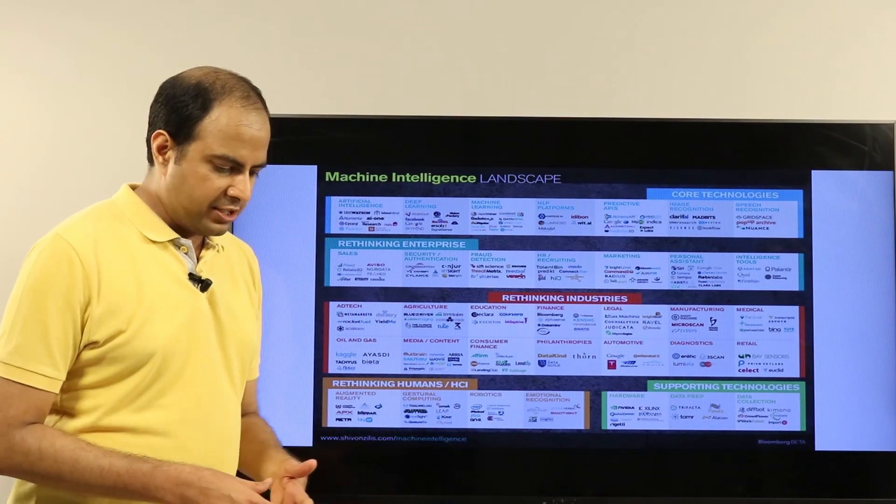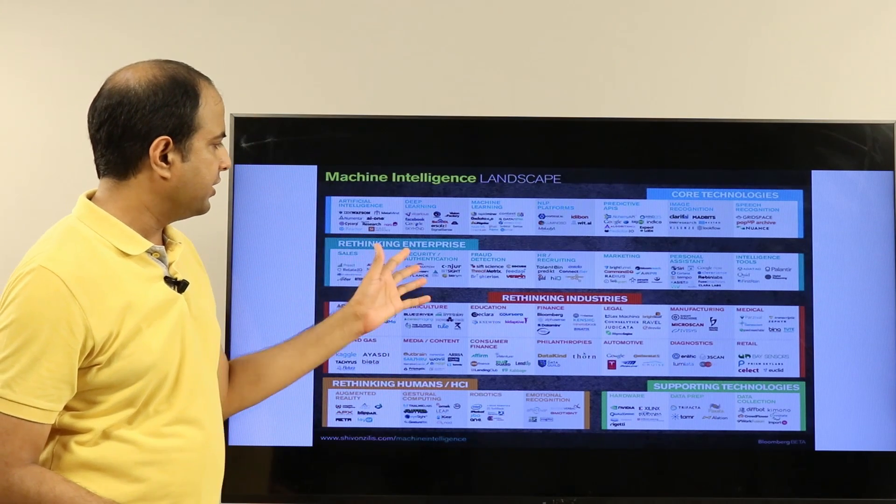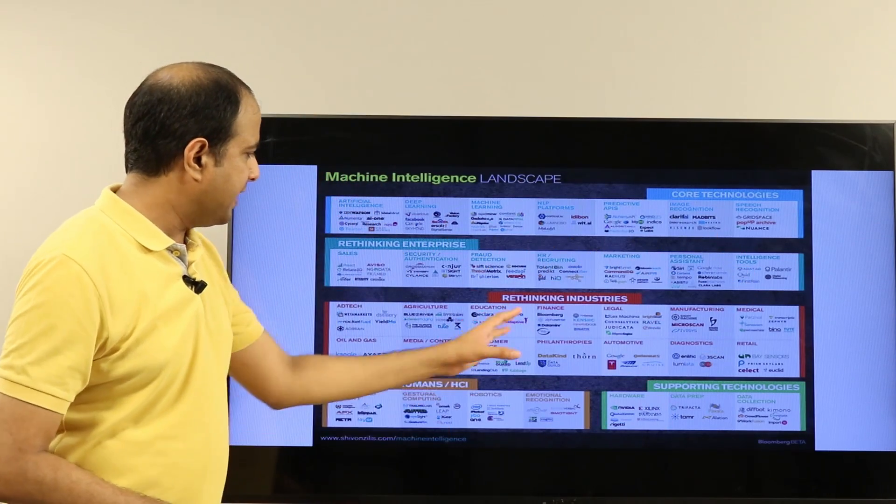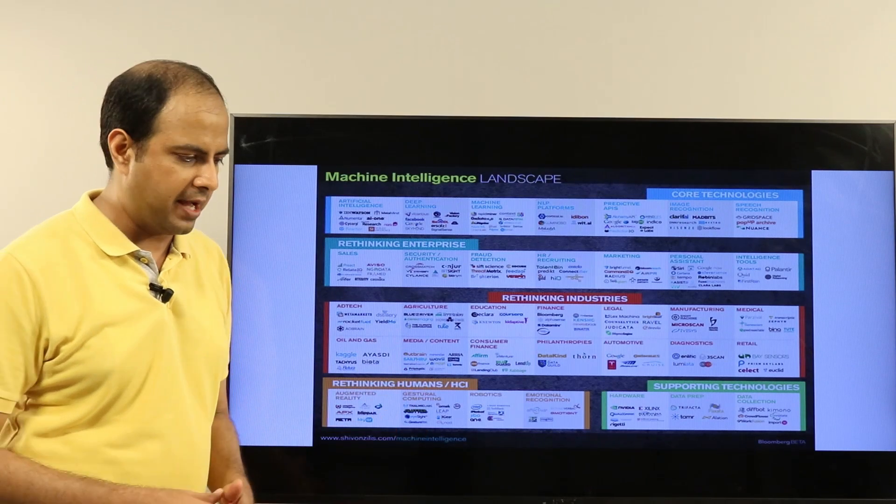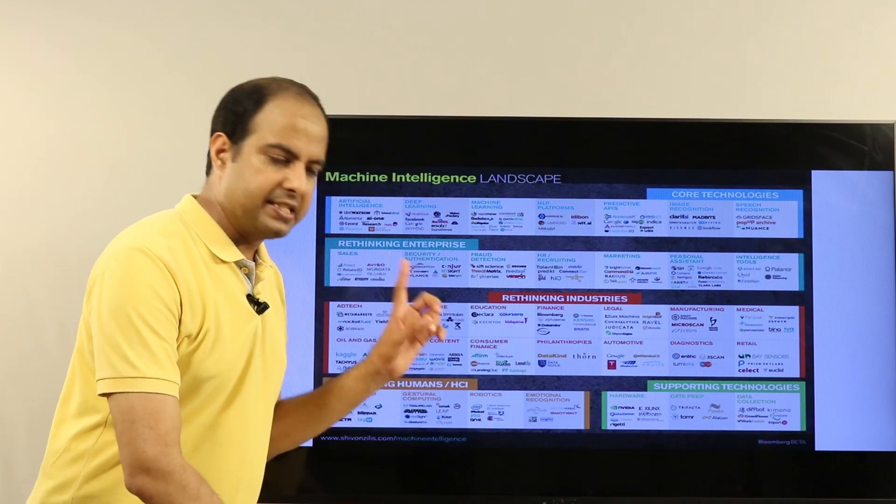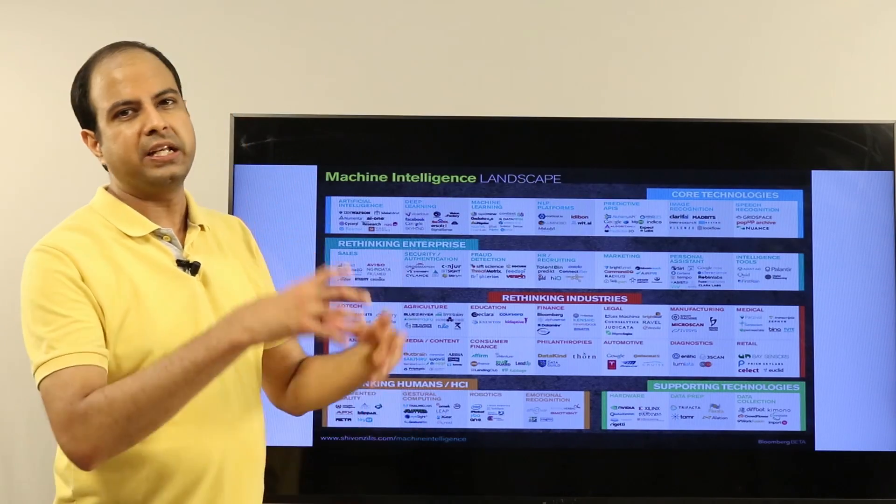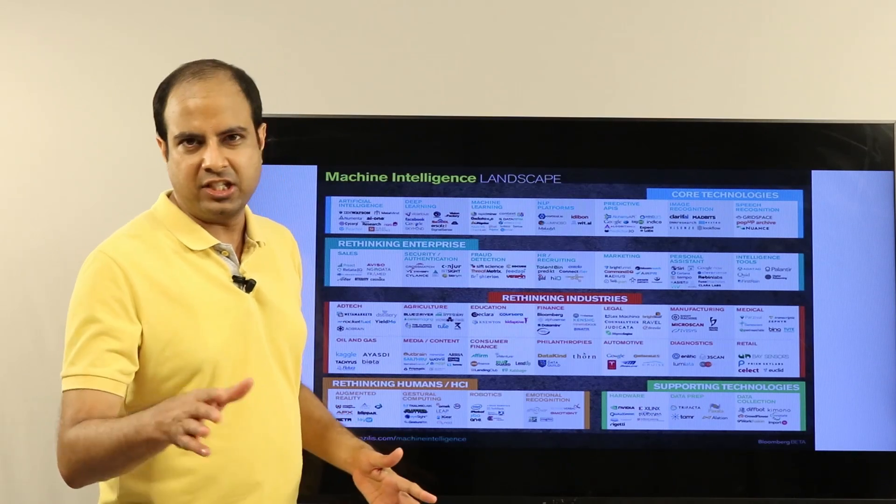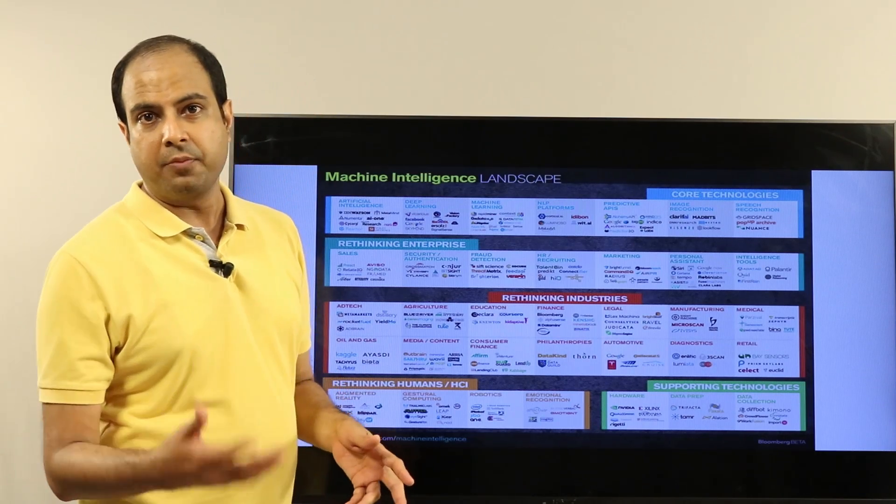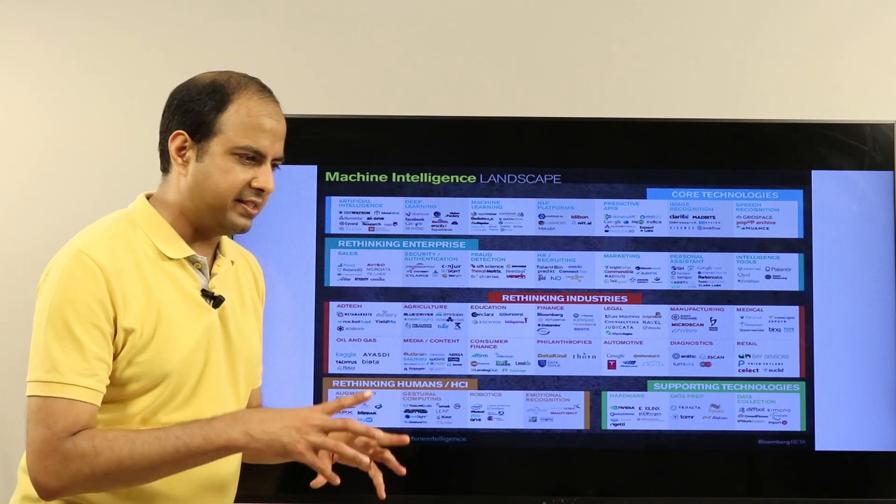Now let's talk about the applications of these two things. Machine learning is applicable across various kinds of things—for example, sales, security, authentication, fraud detection, HR, recruiting, marketing, personal assistance, intelligence tools, finance, education, agriculture—various kinds of industries where machine learning is applicable. Deep learning is also applicable across many of these industries, but there is a difference. Typically people try to apply machine learning to cases where there's not very large amounts of data—small data in that sense but not very small either. So probably if there are hundreds of thousands of instances you would use machine learning. And also if you don't have a lot of compute power you would use machine learning. And if the task is simple to perform, not cognitively very complex, you would use machine learning.